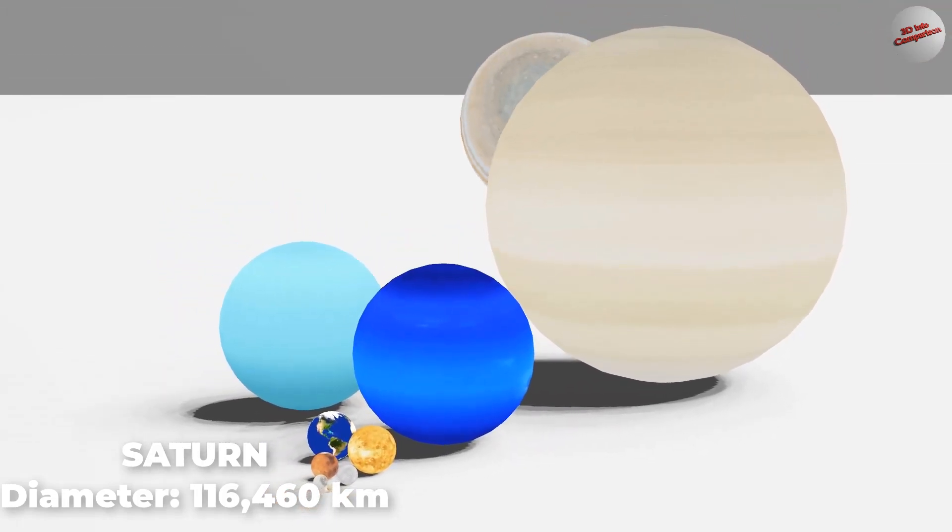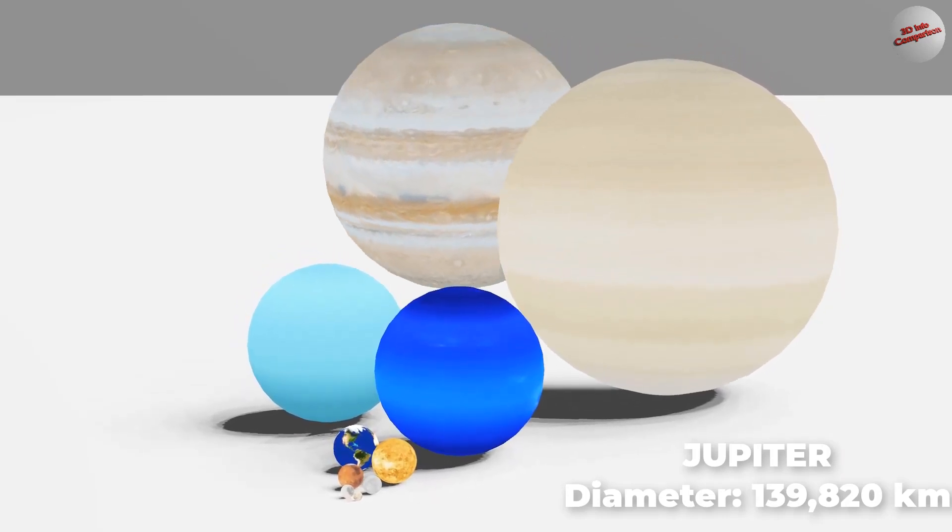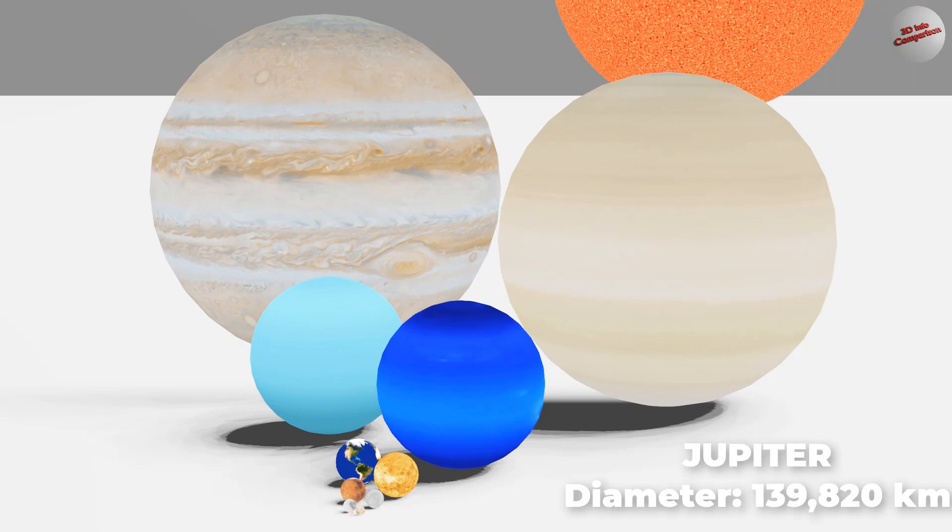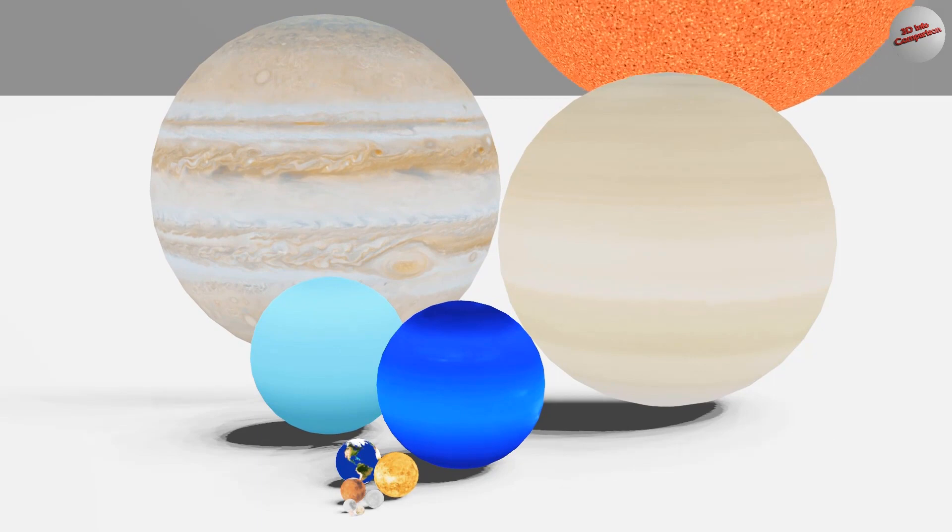Jupiter, the fifth planet from the Sun, is the largest in our solar system. It boasts vibrant bands of clouds and a giant storm called the Great Red Spot. The Sun, a blazing ball of gas, is the center of our solar system.